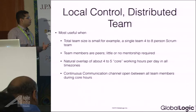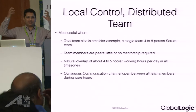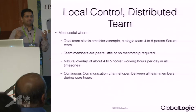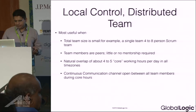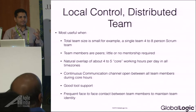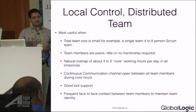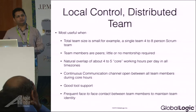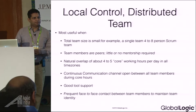A continuous communication channel should be open all the time between team members. That means people have a headset, a laptop, and can do video communication, with good bandwidth. You have a good communication mechanism to be in touch all the time. Good tool support and frequent face-to-face contact between team members to maintain team identity is important. If you are working as one team and want to ensure a good amount of trust, it is important to have colocation, with some team members frequently going to the other side every three or four months.